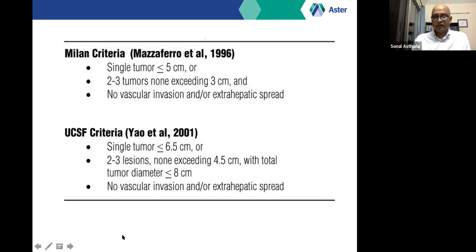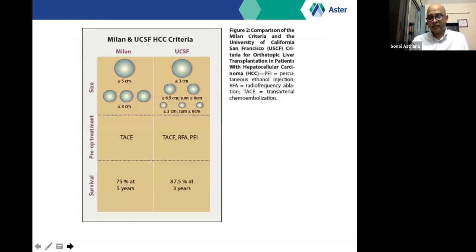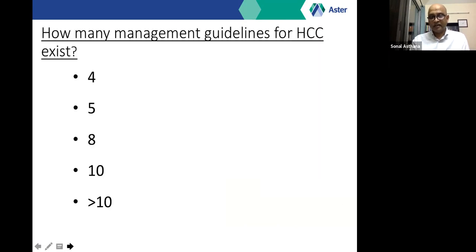The Milan criteria, from the landmark NEJM paper by Mazzaferro et al., defined tumors less than 5 cm or two to three tumors less than 3 cm without extra-hepatic disease as having survivals comparable to non-tumorous causes of transplantation. The UCSF criteria, expanded by Yao et al. in 2001, increased size and number limits and also required no extra-hepatic spread. Results show 75% survival at five years for Milan and 87.5% at three years for UCSF — very well-studied criteria.